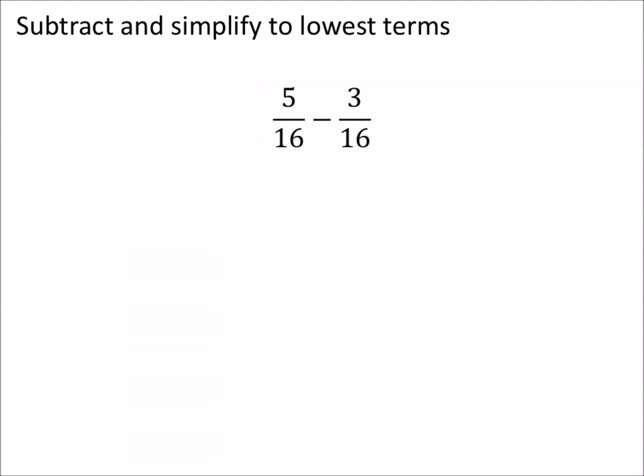Subtract and simplify to lowest terms. The nice thing about this one is that it already has common denominators. So we're just going to change this to 5 minus 3, all over the same denominator, 16.